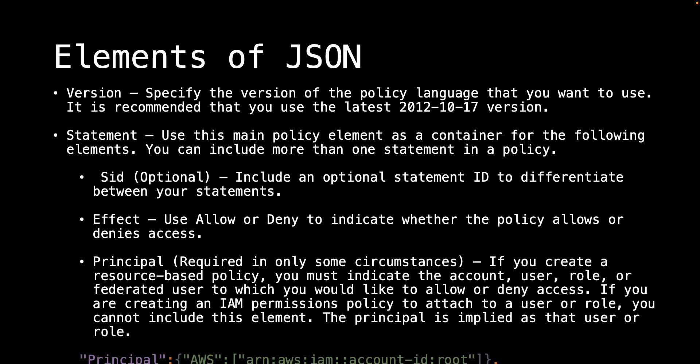The Principal is implied at that user or role. For example, you need to define Principal, then AWS and the ARN of the user ID or account for which you are going to allow access to the resource. We will see the example and then you will get more idea about Principal.